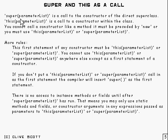Now super followed by a parameter list is a call to the constructor of the direct superclass. And this followed by a parameter list is a call to a constructor within the current class. Now of course, constructors are not methods, and you can't get them to run in the same way as you would methods. You've got to do it by using either new, or this like that, or super like that.